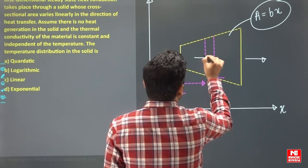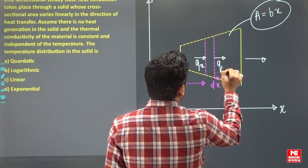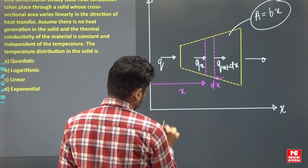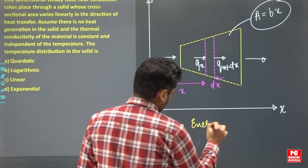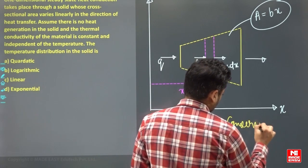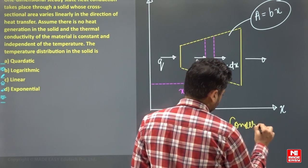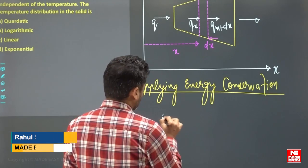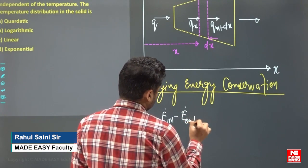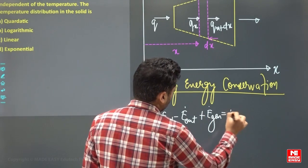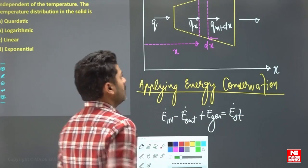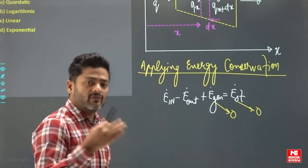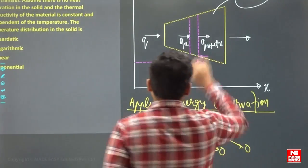At location x, take an element of thickness dx. Let the rate of conduction entering be q_x and leaving be q_{x+dx}. Applying energy conservation: E-dot-in minus E-dot-out plus E-dot-generation equals E-dot-stored. Since it is steady state, E-dot-stored is zero. No heat generation, so E-dot-generation is also zero. Therefore E-dot-in equals E-dot-out, meaning q_x equals q_{x+dx}.